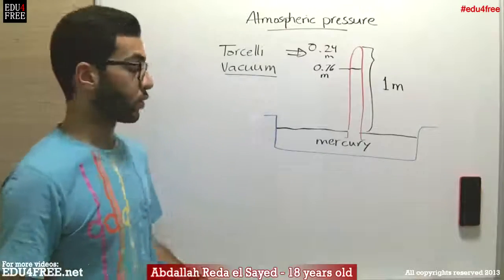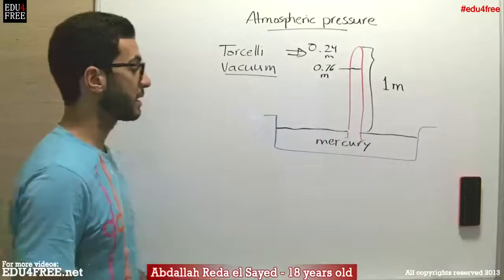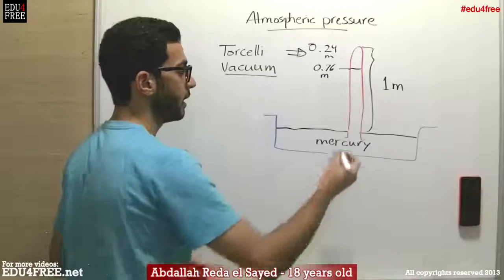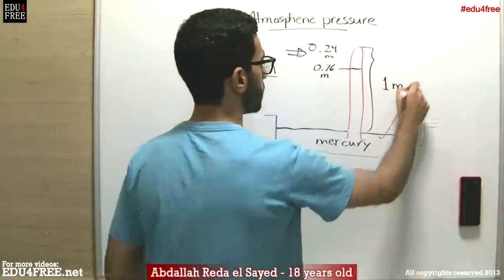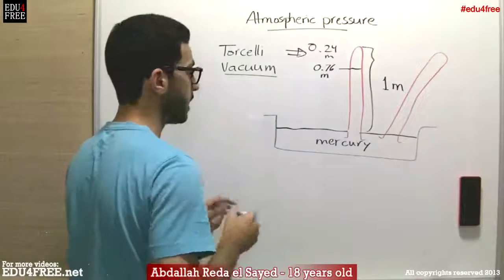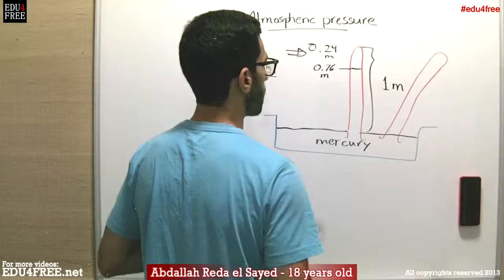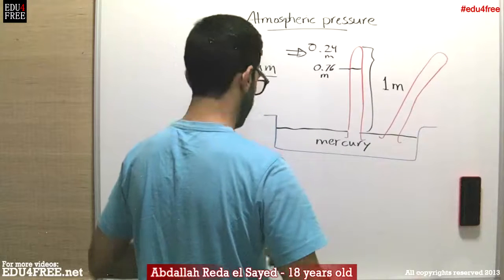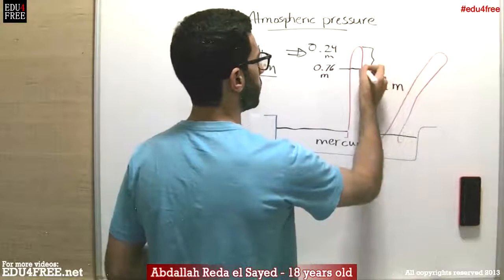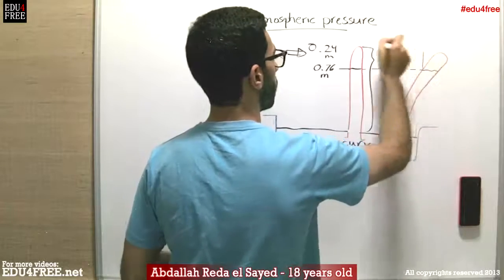He wanted to make sure that the height of mercury would be the same if he tilted the tube. He actually did that, and found out that the height was the same — the mercury raised to the same point, and that space above was the vacuum.